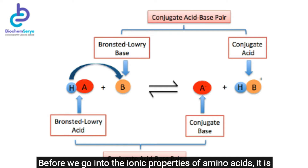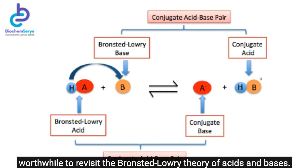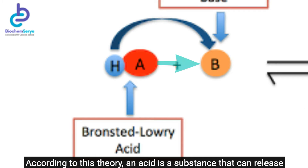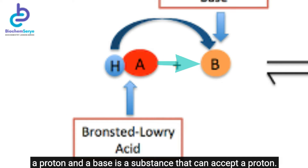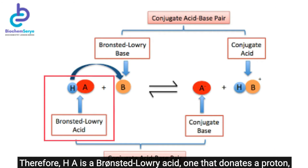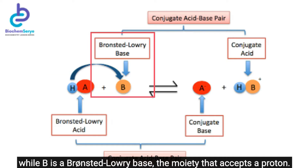Before we go into the ionic properties of amino acids, it is worthwhile to revisit the Bronsted-Lowry theory of acids and bases. According to this theory, an acid is a substance that can release a proton, and a base is a substance that can accept a proton. Therefore, HA is a Bronsted-Lowry acid that donates a proton, while B is a Bronsted-Lowry base, the moiety that accepts a proton.